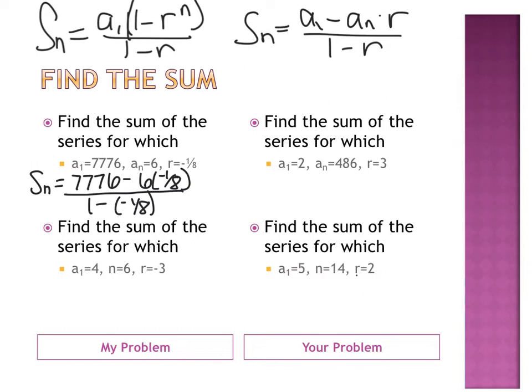So, take a second, and multiply my negative 6 and my negative 1 eighth, and what do I get? I get a positive, I get a positive, 6 times 1 eighth, which is reduced to 3 fourths. So, I get 7,776 plus 3 fourths, but it's minus a negative, minus times a negative, so that becomes plus.